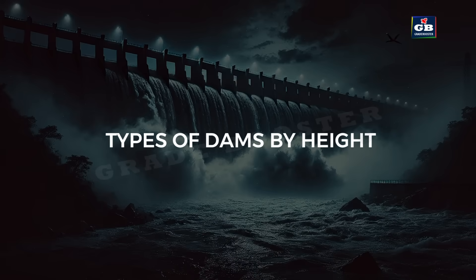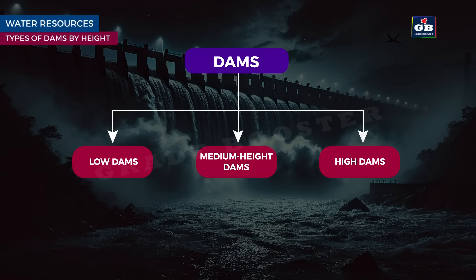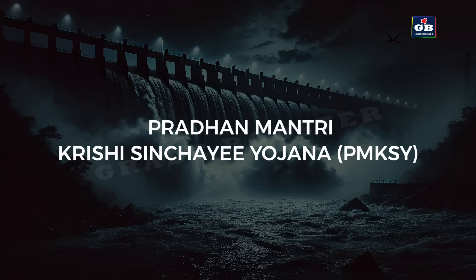Types of dams by height: low dams, which are short in height; medium height dams, which are of moderate height; and high dams, which are tall structures. Alternatively, dams can be called large dams or major dams based on their size and importance.